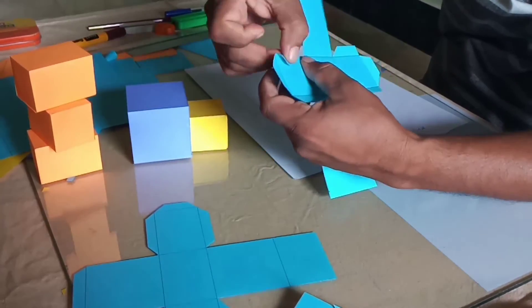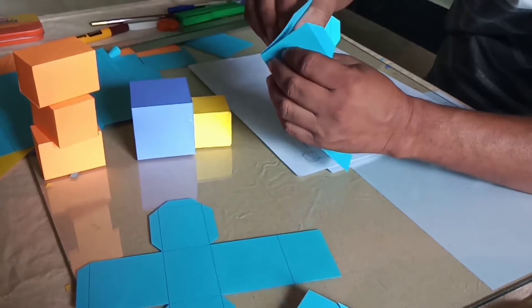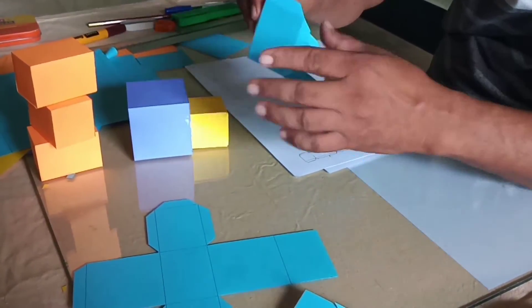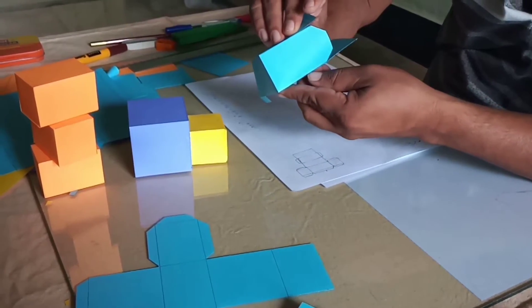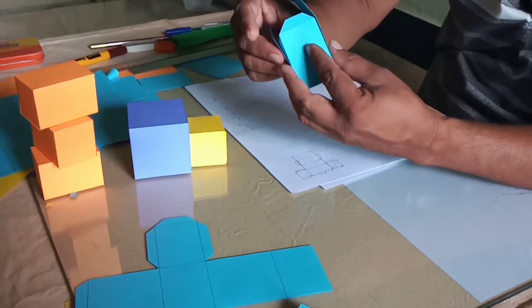We apply glue over here and stick it like this. We apply glue over here and stick it like this. So this is how we prepare the cuboids.